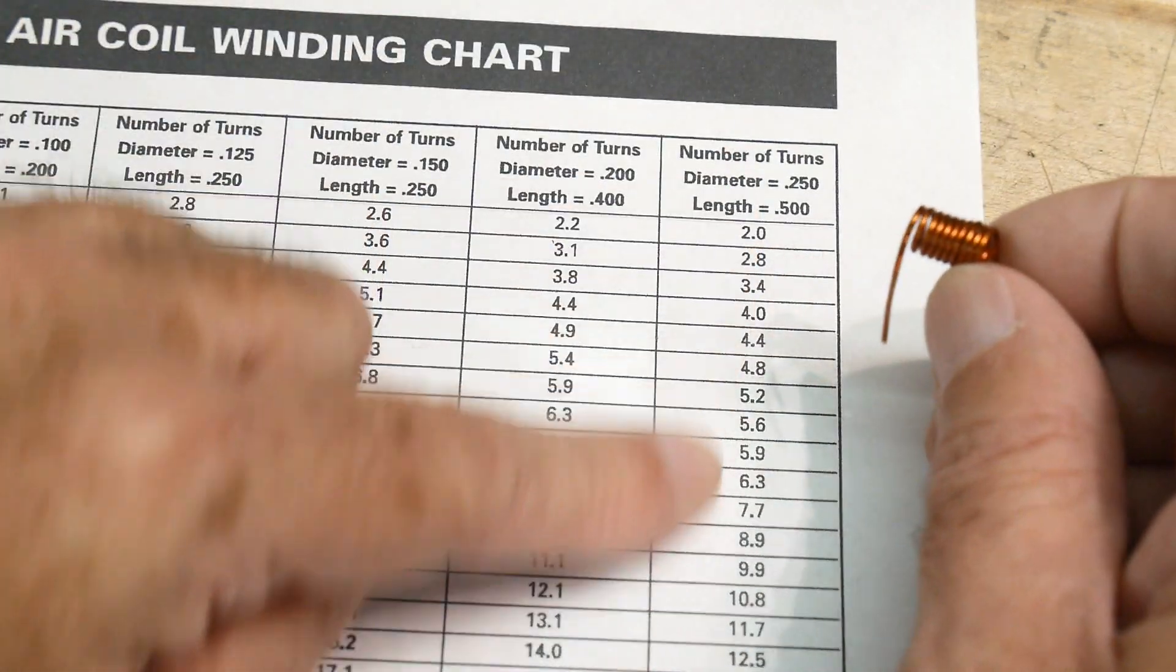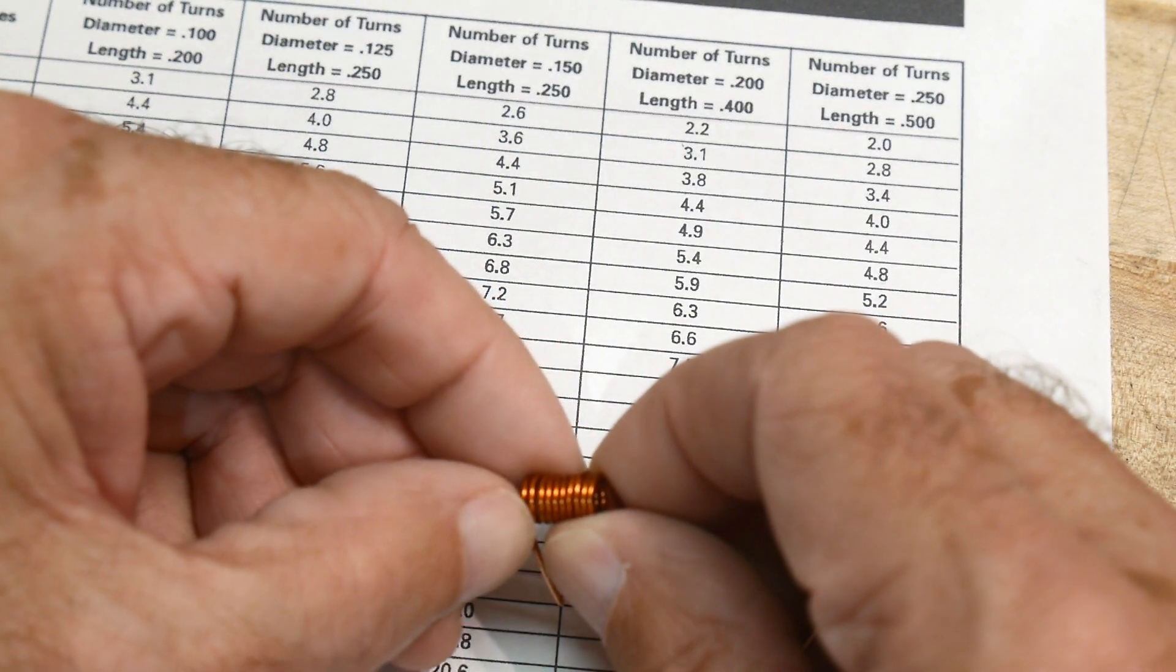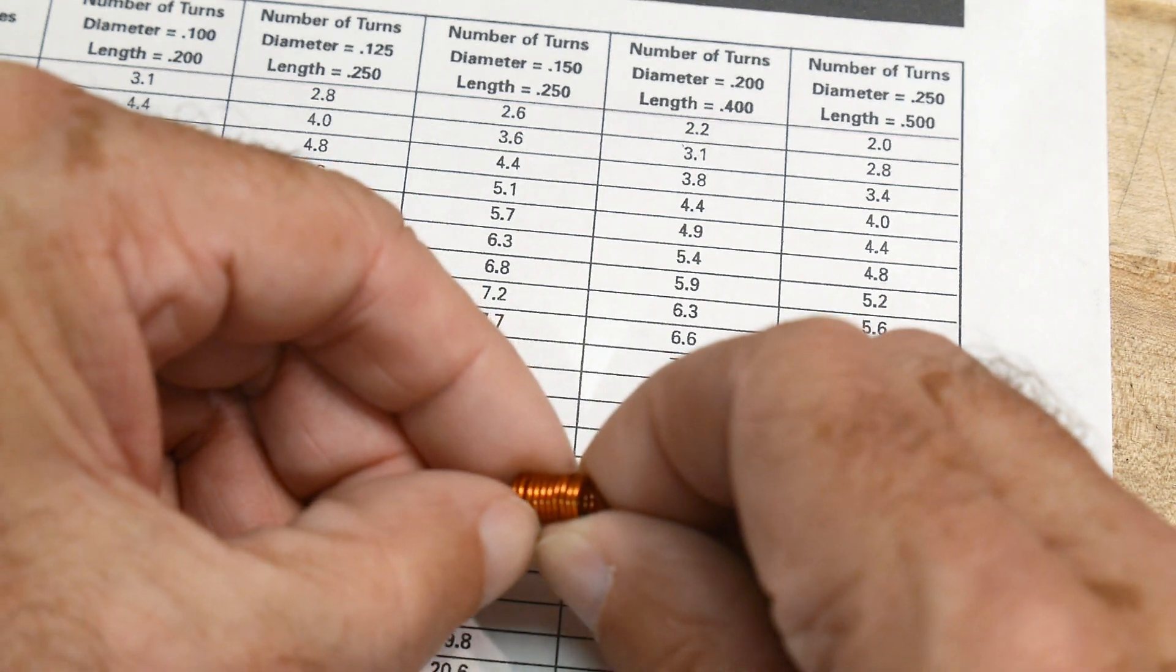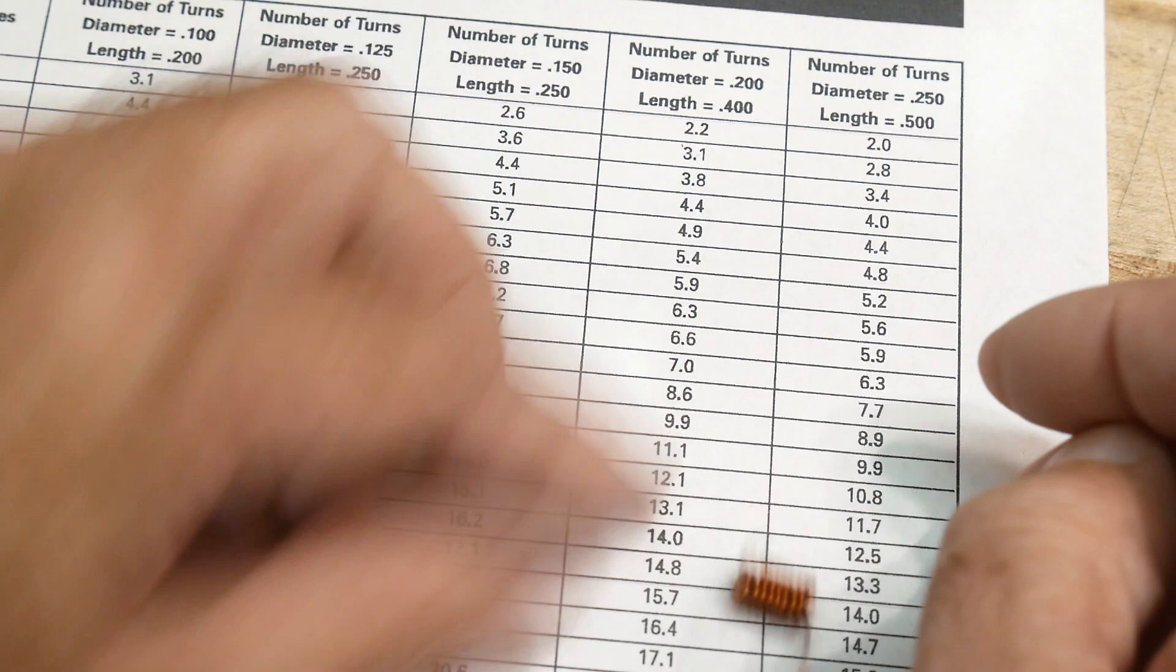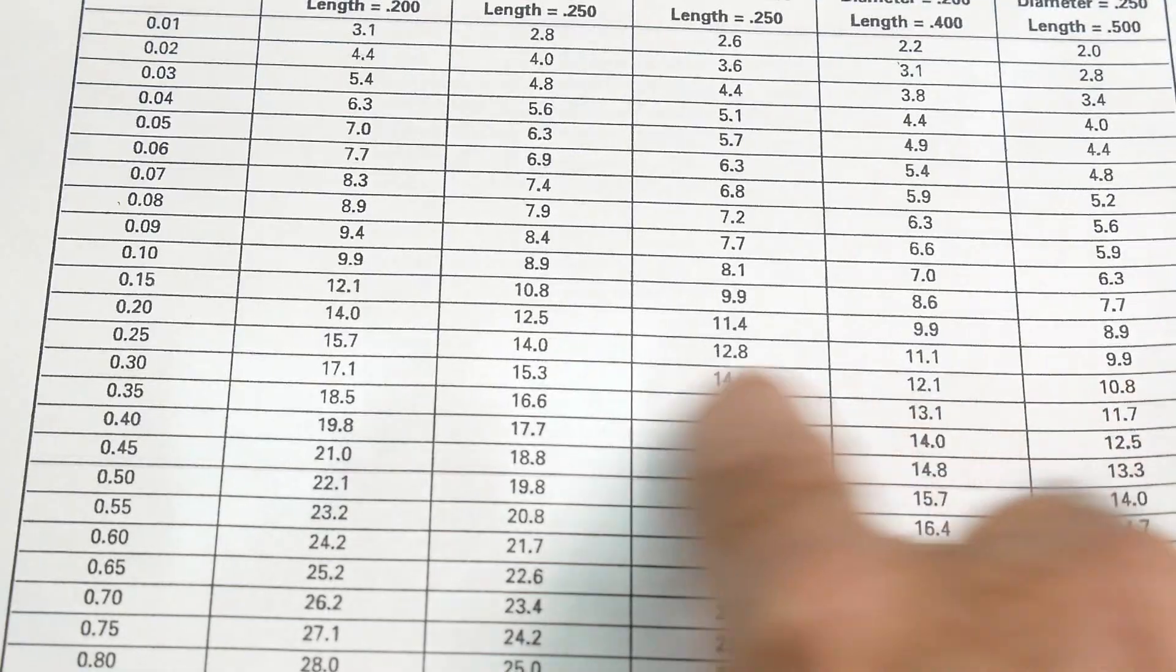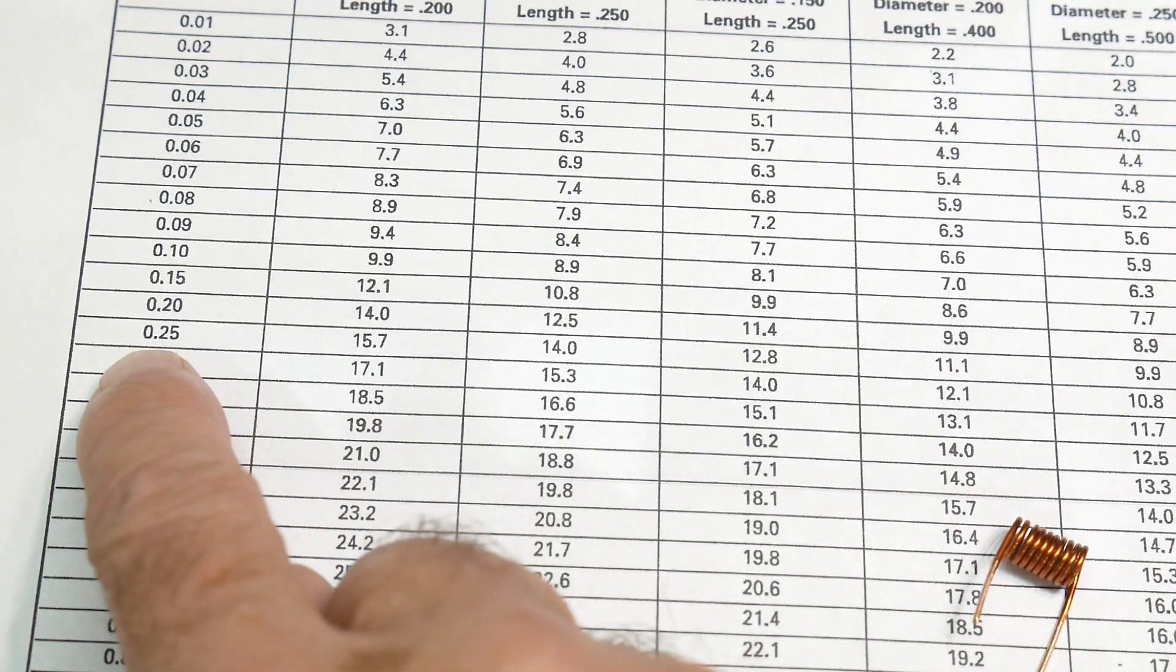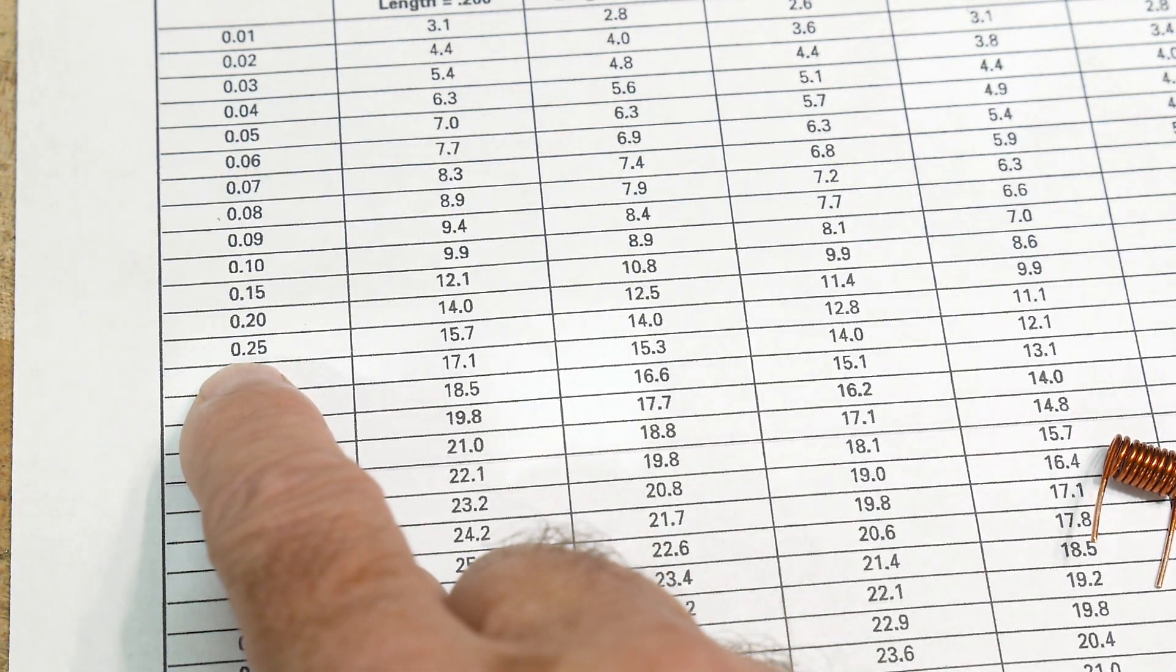This one is a quarter inch in diameter. So we can kind of go down this table here. Then you can say, well, how many windings do you need for a particular inductance? And so I've wound here, let's see, two, four, six, eight, ten. So I have 10 windings. So we can come down the chart here to 9.9 and we go across, and it says we should have 0.25 micro Henrys.